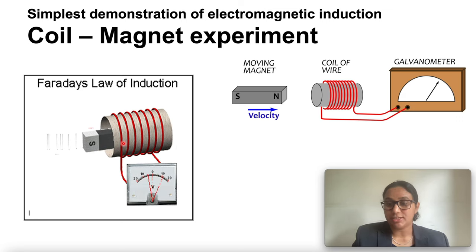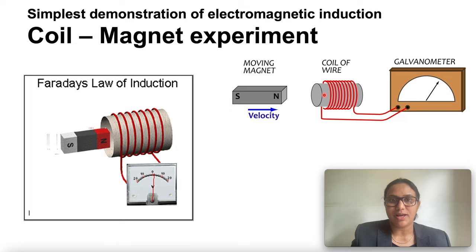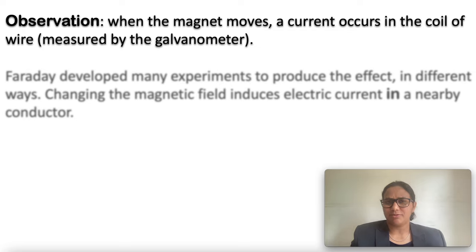When the coil is kept stationary with respect to the magnet, the deflection of the galvanometer drops to zero. What do you conclude from this activity? It is clear from this activity that the motion of a magnet with respect to the coil produces an induced potential difference which sets up an induced electric current in the circuit.